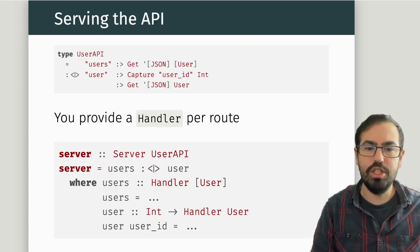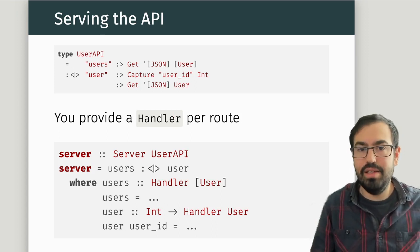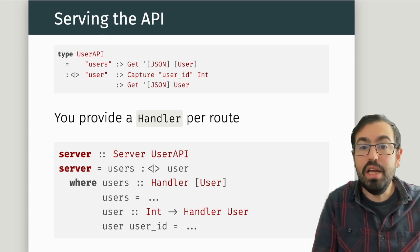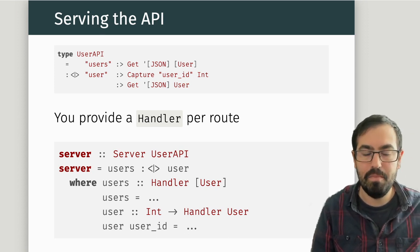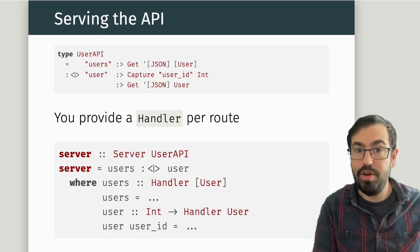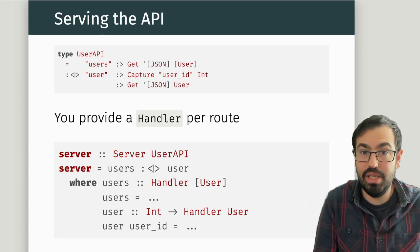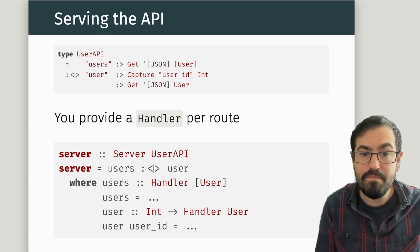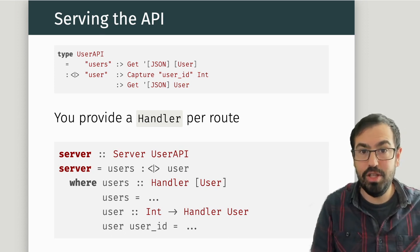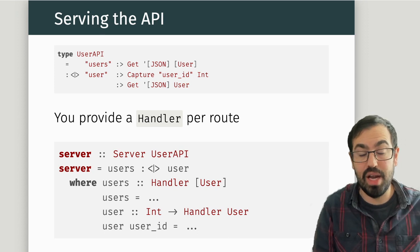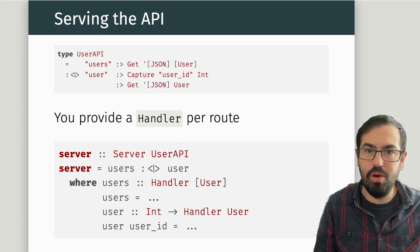To create a server, you write a function for each of the different routes. The library takes care of translating the capture — for example, a user ID as an integer — as an argument to the function. If you look at the user function, it takes an int. So the library handles all this marshalling. The only difference from a normal function is that they all run in the Handler monad.